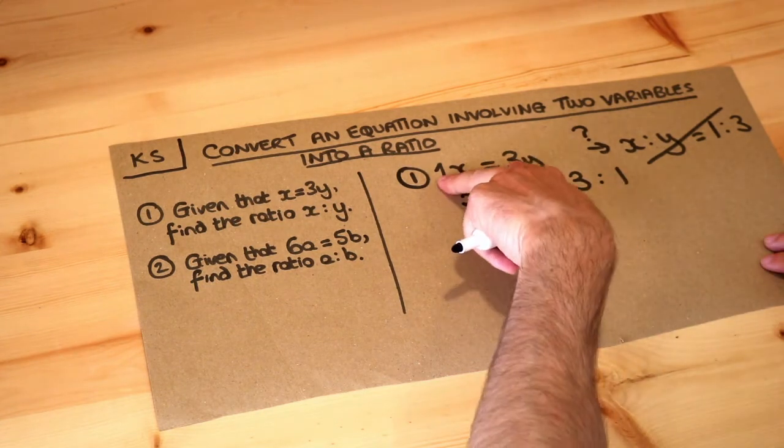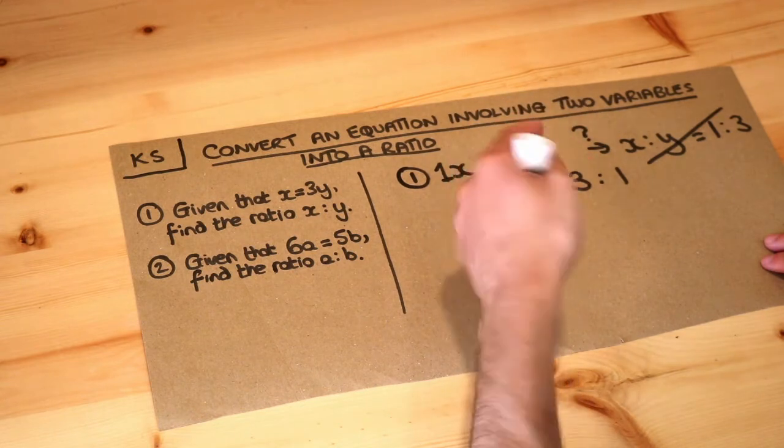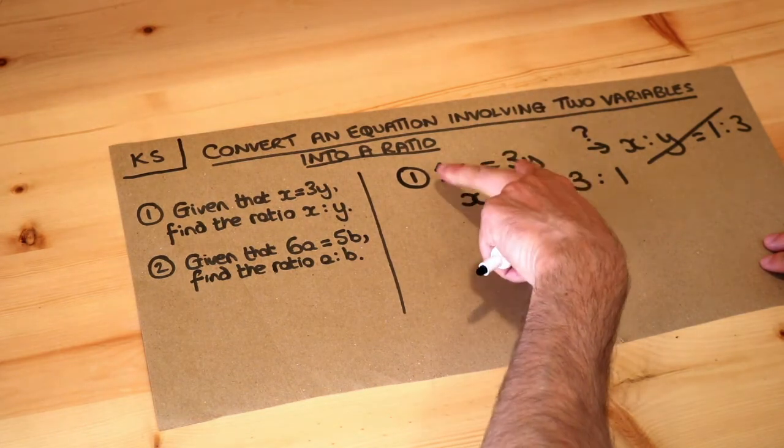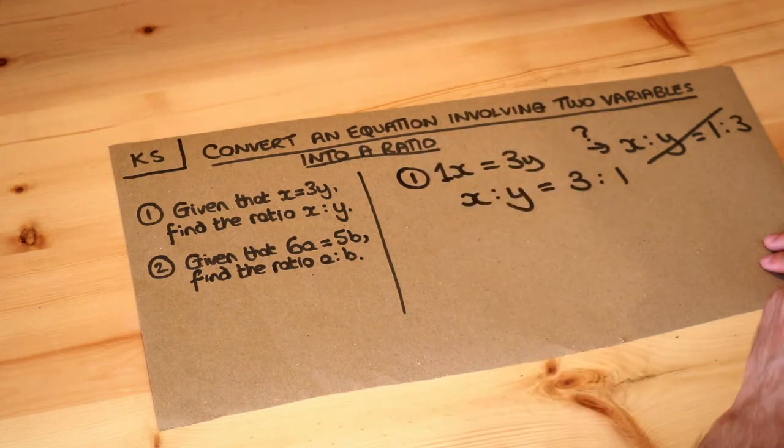So what actually happens is that these two numbers reverse. So if you've got 1 here and 3 here in front of the x and the y, then you swap them round and you get the ratio 3 to 1.